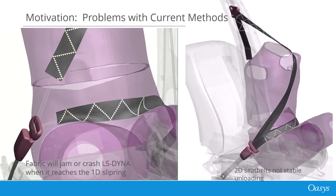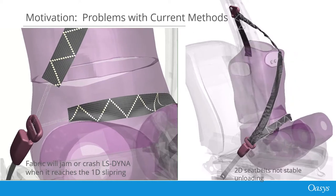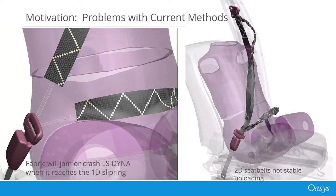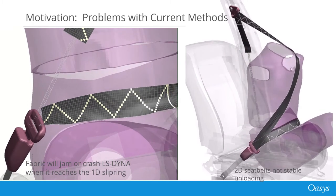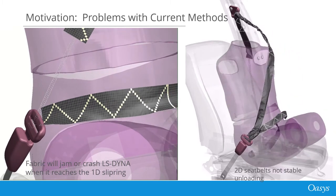2D belts, as shown on the right, can be used in some situations to get a better result, but common challenges include instability during unloading, hang-ups at the slip ring, and unrealistic contact friction.